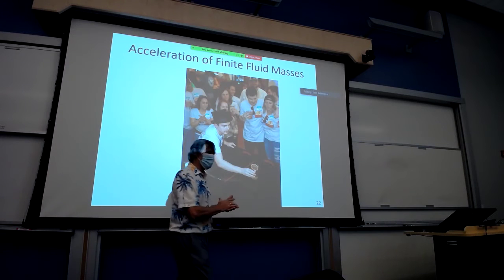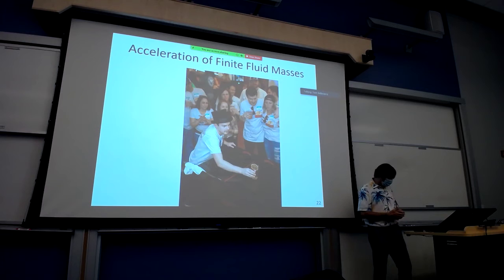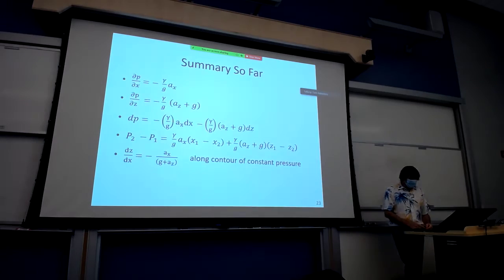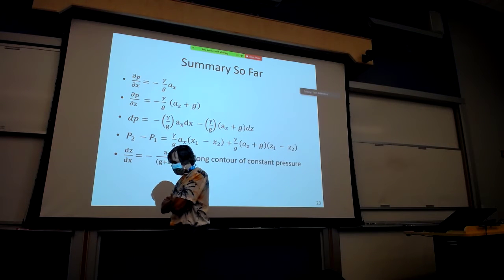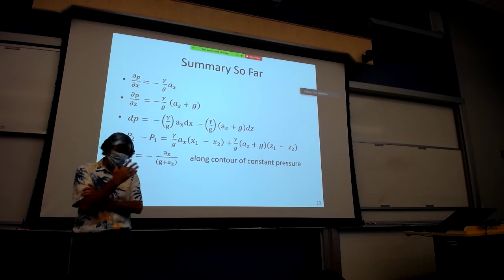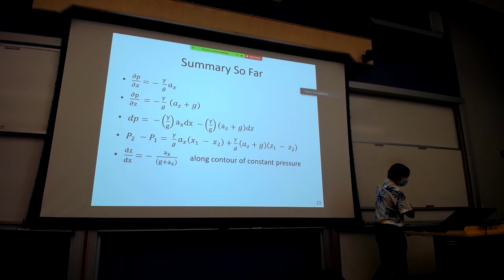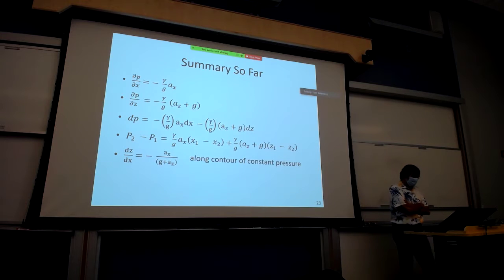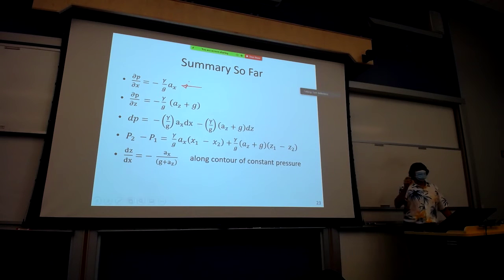We're going to continue where we started off last time. There's a handout I gave you over two lectures ago on acceleration of fluid masses. What we've developed is a general case of finite fluid volumes with acceleration fields in addition to gravity. If we have horizontal acceleration, we will have a change in pressure when we move horizontally.